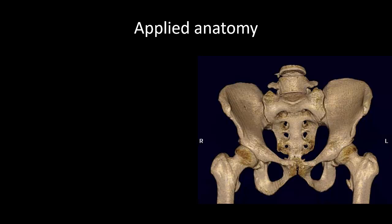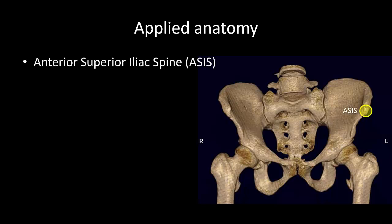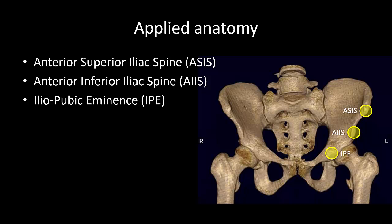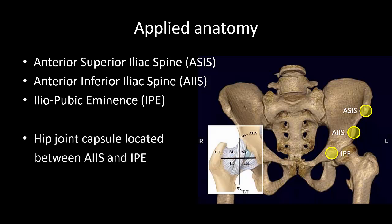There are three important bony landmarks: the anterior superior iliac spine, the anterior inferior iliac spine, and the iliopubic eminence. The hip joint capsule is located between the anterior inferior iliac spine and the iliopubic eminence.